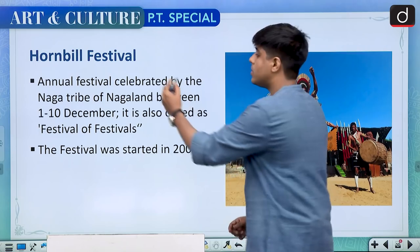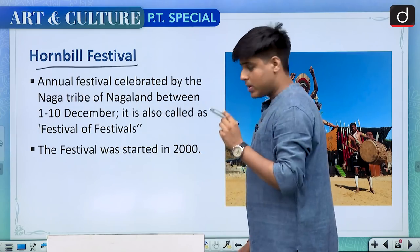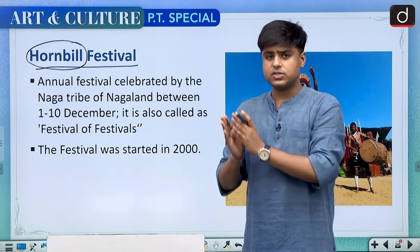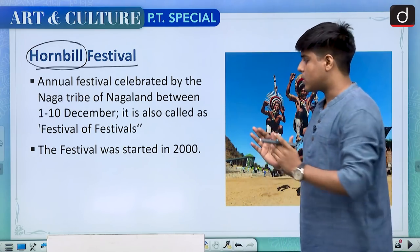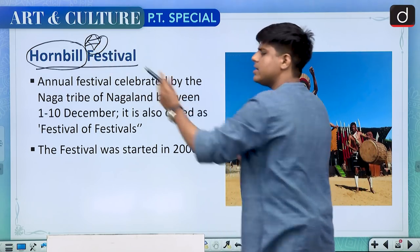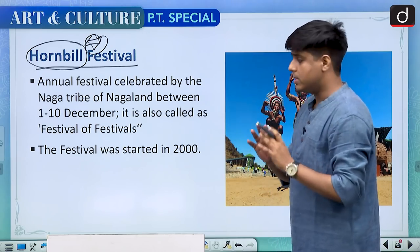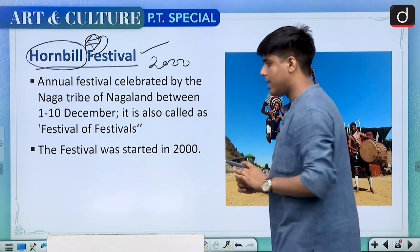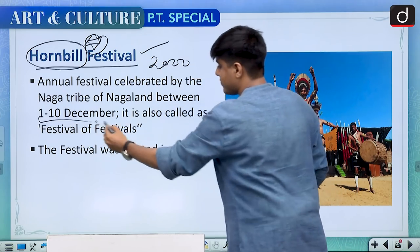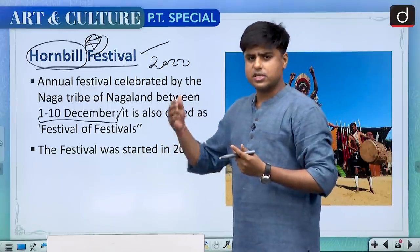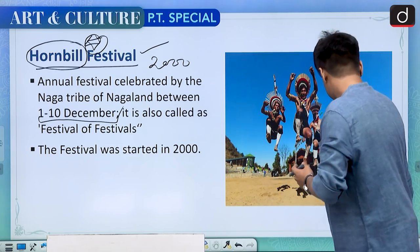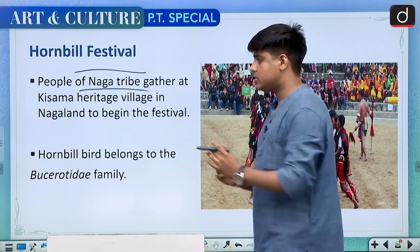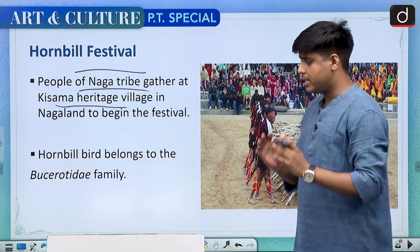A very important festival is the Hornbill festival. Hornbill is a very important bird for the agricultural communities and all the tribes of Nagaland. Various tribes have Hornbill in some of their important motifs or symbols associated with their culture. From 2000 onwards, this festival has been celebrated in Nagaland between 1st to 10th December, and it is celebrated with such pomp and show that it is also called the festival of festivals. The people of the Naga tribe gather in a heritage village called Kisama Heritage Village, marking the beginning of this festival.